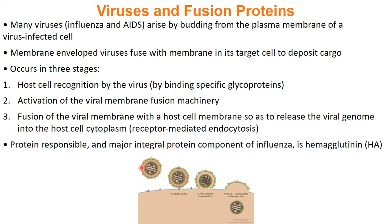A virus-enclosed vesicle will have viral proteins on it, which help bind specific glycoproteins. This lets the virus know it has found the right cell type to infect. This is all activated by viral membrane fusion proteins, and then a fusion event occurs which releases the viral genome into the host cell cytoplasm — a process called receptor-mediated endocytosis — allowing the genome to go and make more viruses.